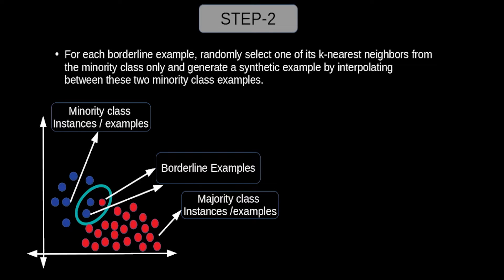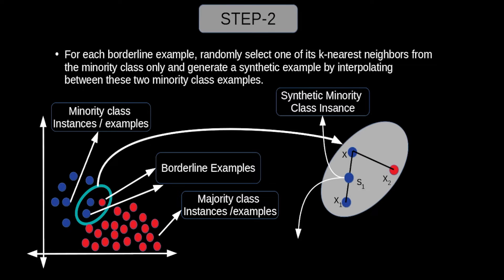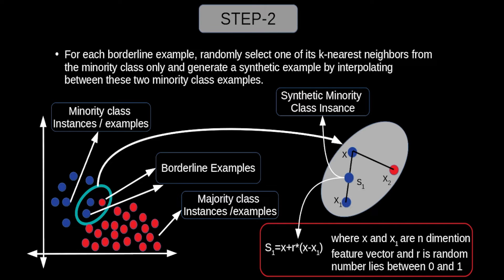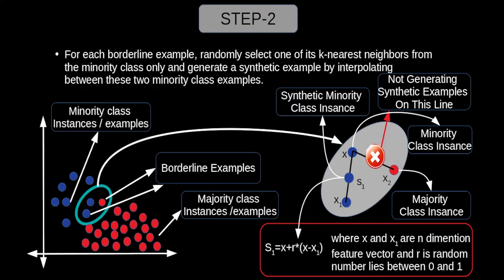In step 2, for each borderline example we randomly select one of its k-nearest neighbors from the minority class only and generate a synthetic example by interpolating these two minority class examples. Here x and x1 are minority class examples; S1 is generated using S1 = x + r × (x − x1). We do not generate any synthetic example using the majority class neighbor x2, as it would not be a good representative of the minority class.